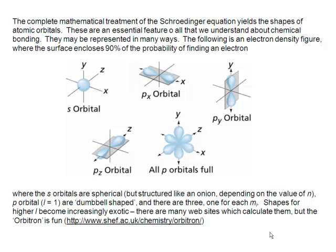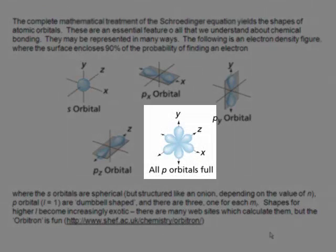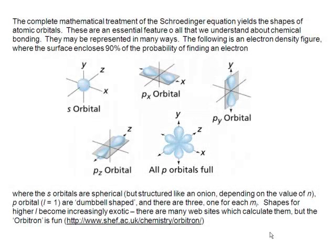And then from that information on the hydrogen atom, we infer pretty much everything we know about chemical bonding. And as you all know, the s orbitals are spherical, and as you go up in n, they have a kind of an onion-like structure. p orbitals have this dumbbell shape, and they can point in three directions in space. So that's l equals 1, and that's ml equals minus 1, 0, and plus 1, giving the directions in space.